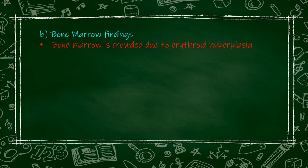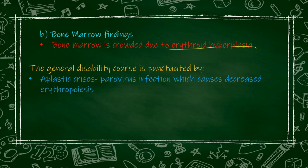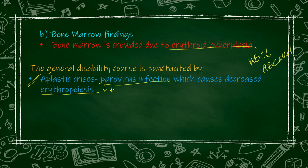In bone marrow findings, erythroid hyperplasia means the number of RBC-producing cells increases, so the bone marrow will appear crowded. Usually hereditary spherocytosis is not visible in humans because it is a very mild disease that resolves on its own. But it often gets accentuated if aplastic crisis occurs — for example, parvovirus infection, which decreases erythropoiesis abnormally. In that case, RBC destruction is already occurring due to hereditary spherocytosis, and RBC production rate also decreases — so hereditary spherocytosis becomes severe.